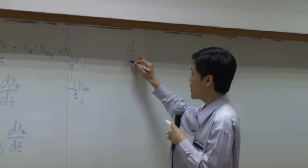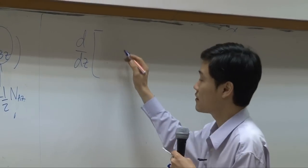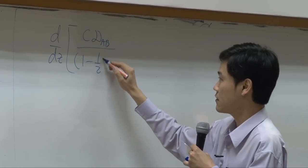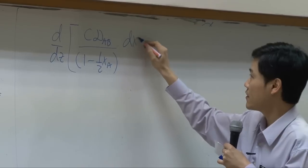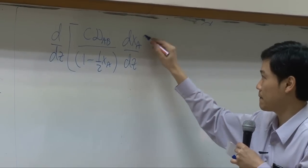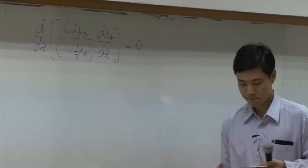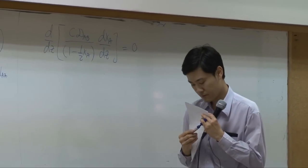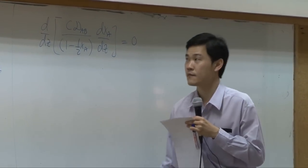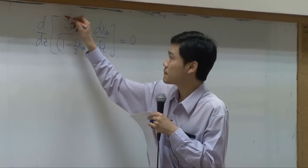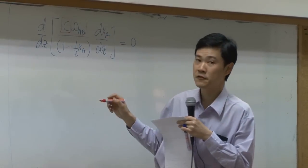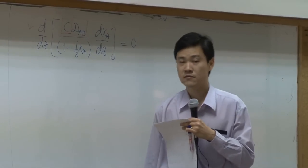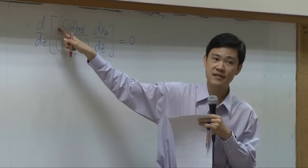So doing that, you get d by dZ of C D_AB over 1 minus half X_A, dX_A by dZ equal to 0. Is C constant? We know for sure diffusivity is constant. It can be taken out. What about C here? Is it constant?